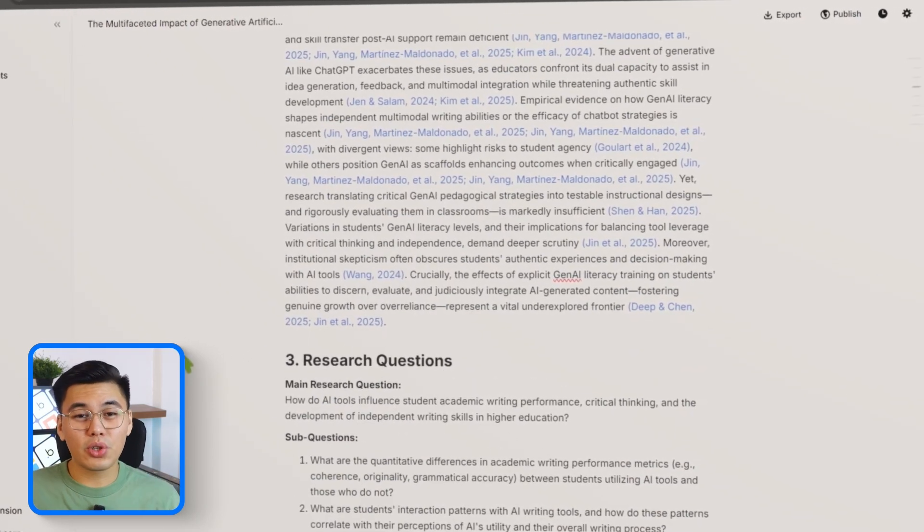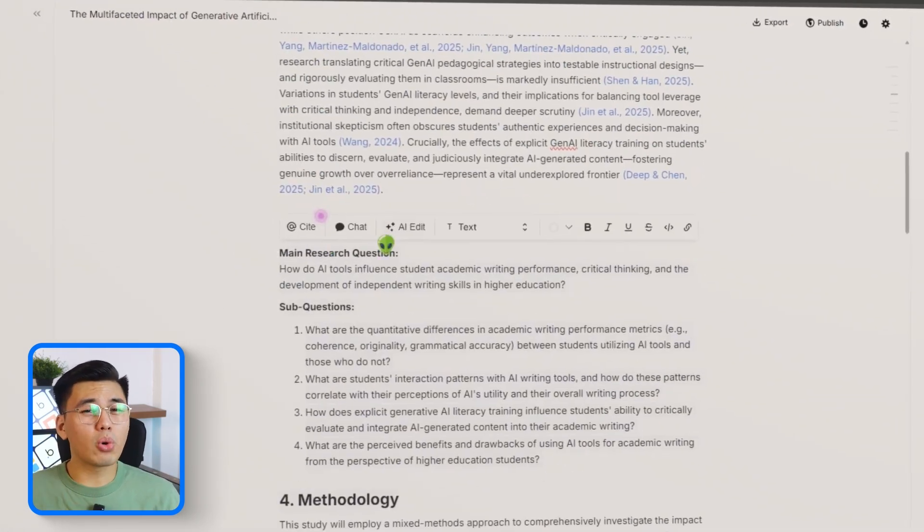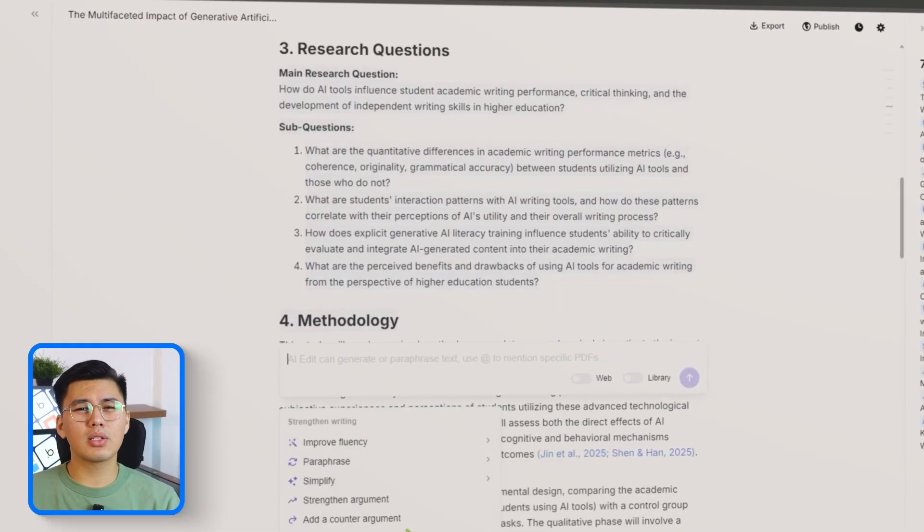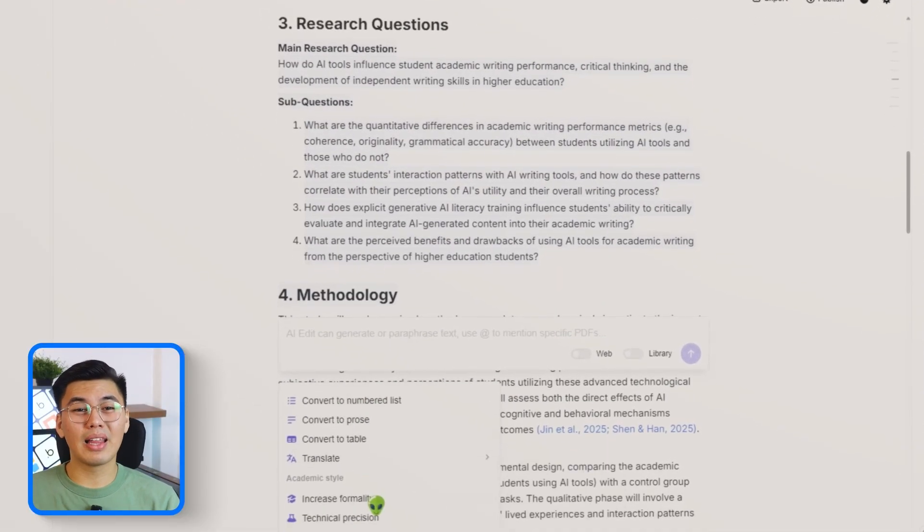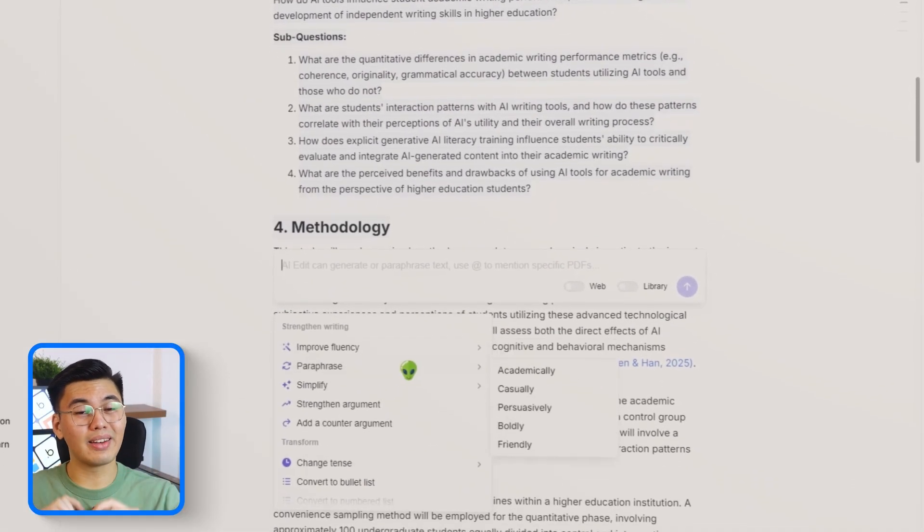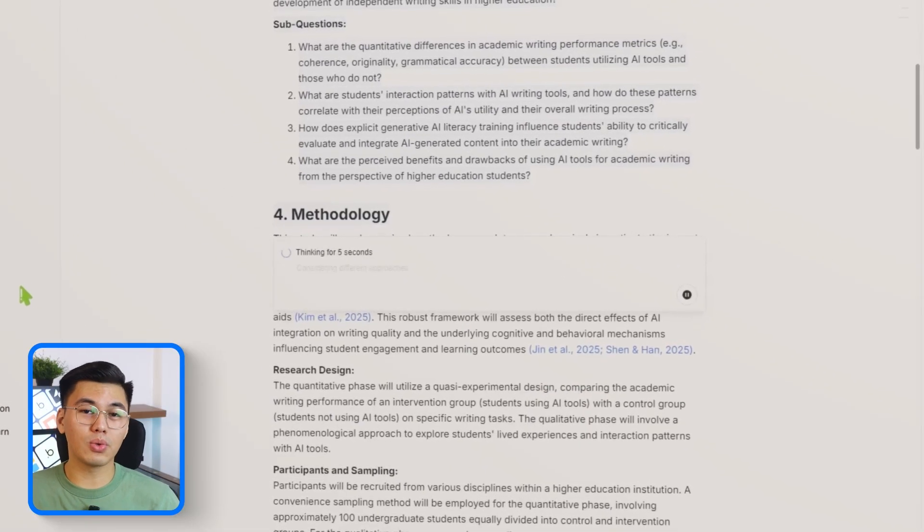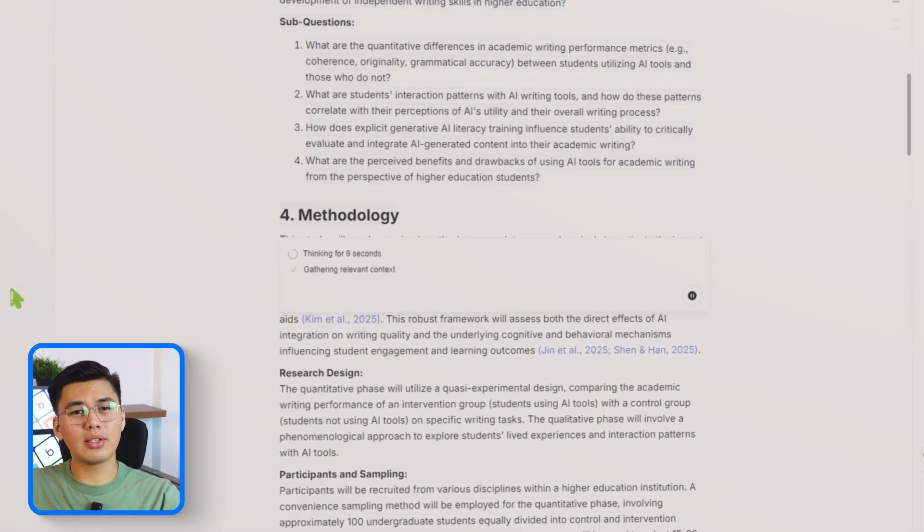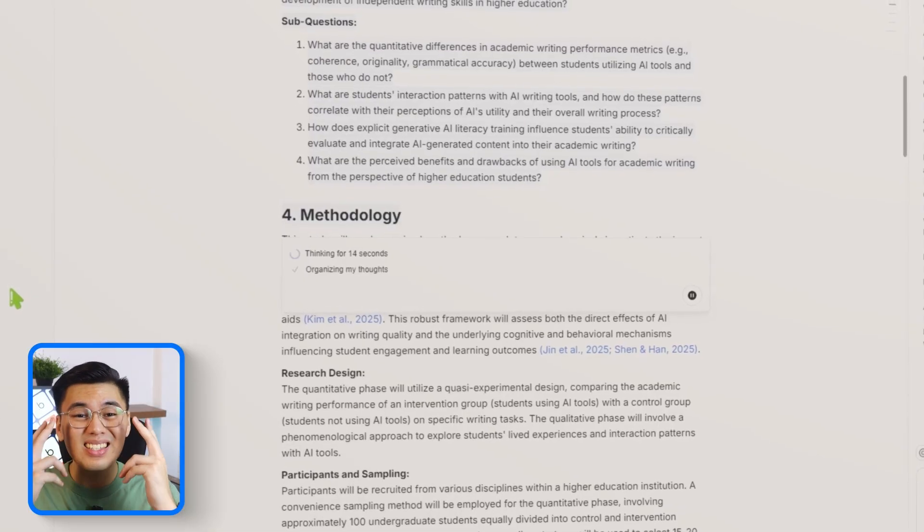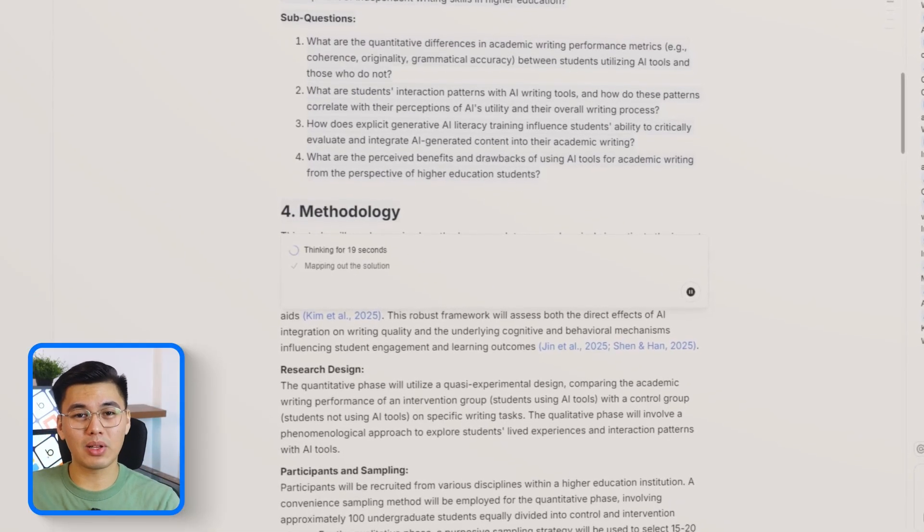Now, we'll move on to the research questions, one of the most important parts of any proposal. Just like in other parts, I'm going to highlight both the main question and the sub-questions, then run them through Jenny's writing improvement tools. Jenny cleans up the phrasing, sharpens the focus, and makes each question more academically appropriate.